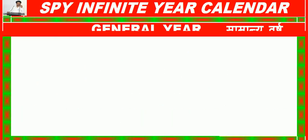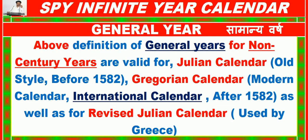The above definition of General Years for non-century years is valid for the Julian Calendar (Old Style, before 1582), the Gregorian Calendar (Modern Calendar / International Calendar, after 1582), as well as for the Revised Julian Calendar used by Greece.